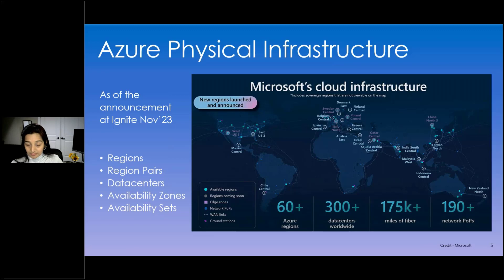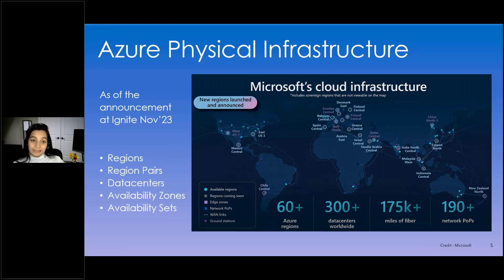Availability zones are physically separate locations, or data centers within an Azure region, with independent power, cooling, and networking. They can physically separate your resources within an Azure region. Availability sets automatically distribute your VMs across fault domains, helping keep your application online during maintenance or a hardware failure. These capabilities ensure your Azure workloads are highly available and drastically reduce downtime during outages or disasters. We will see some of these configurations in action in the demo.